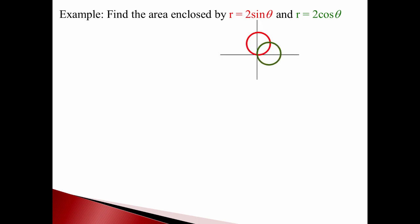Let's try another one. Let's find the area enclosed by these two circles: r = 2cosθ and r = 2sinθ. Those are circles. If you graph those carefully or look back to the last video, what we get are two circles — 2cosθ in green and 2sinθ in red. We want to find the area in between those, this area right here in the intersection, like a Venn diagram. First step: graph it carefully and know what we're looking at.